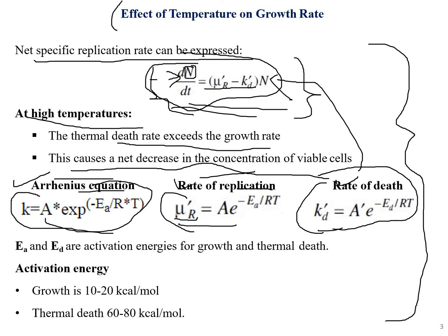Ea and Ed are the activation energies for growth and thermal death respectively. The activation energy for growth (Ea) is approximately 10 to 20 kilocalories per mole, whereas thermal death requires much more energy — around 60 to 80 kilocalories per mole.